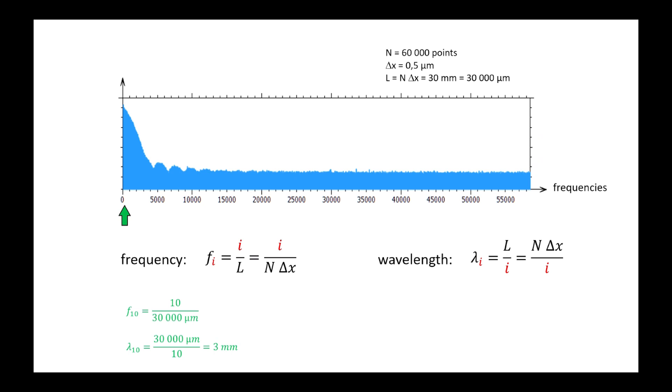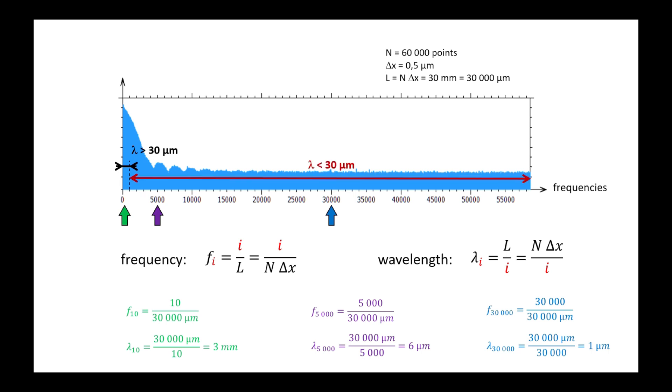But when you go up in frequency, you get very small wavelengths, the last of which correspond to noise or micro-roughness. The most useful part of a spectrum is therefore rather in the first left half of the spectrum. We also note that the long wavelengths, which represent a fraction of the length of the profile, are few. Here, we have only 1,000 frequencies to represent wavelengths from 30 mm to 30 micrometers, but 59,000 frequencies to represent wavelengths below 30 micrometers.